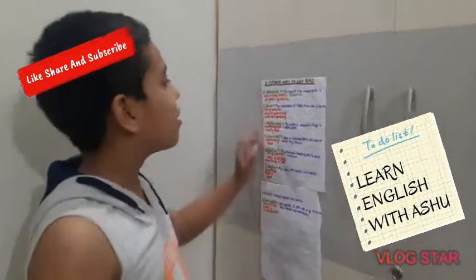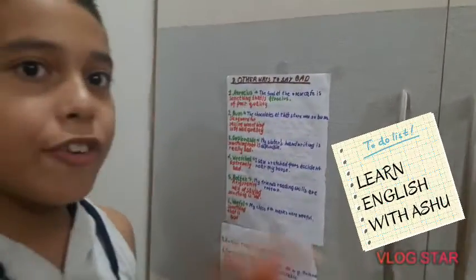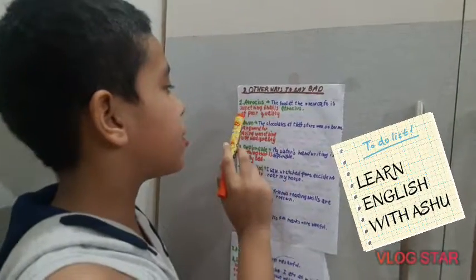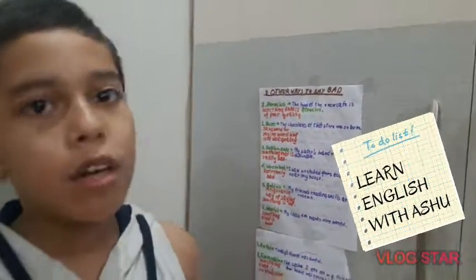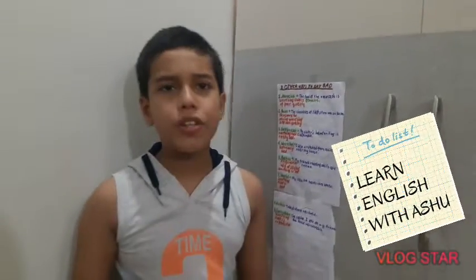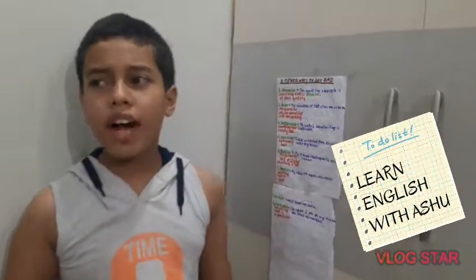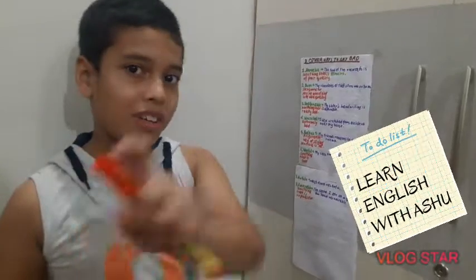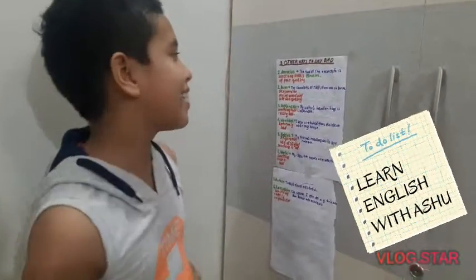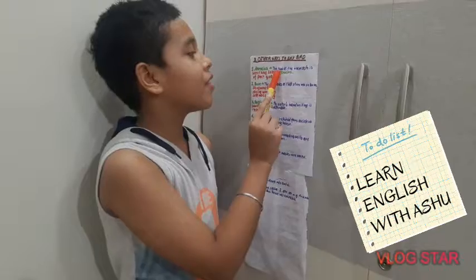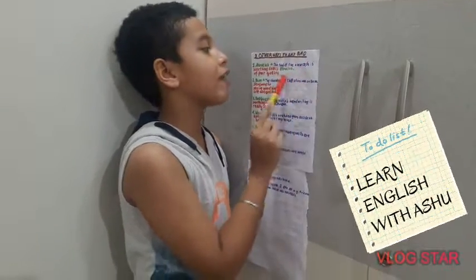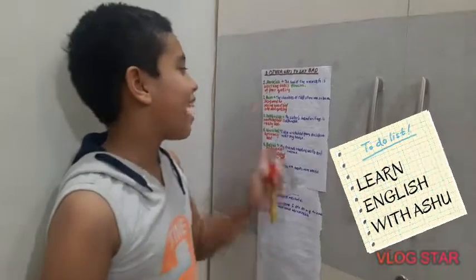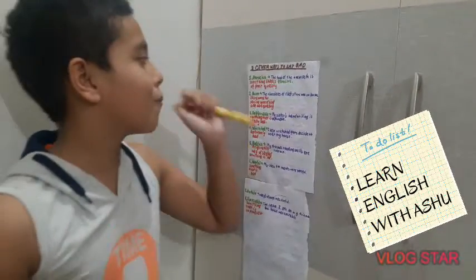Our first word is 'atrocious'. Atrocious means something that is of poor quality. For example, if you go to any hotel and you don't like the food and you would say the food was really bad, instead of that we can say: 'The food at the new cafe is atrocious.'